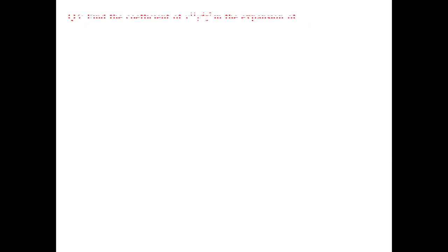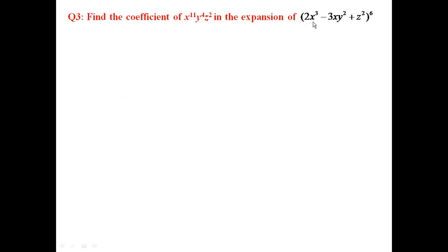Next problem: find the coefficient of x^11 * y^4 * z^2 in the expansion of (2x^3 - 3xy^2 + z^2)^6. We observe in the required expansion that more than two terms are involved: 2x^3 is one term, -3xy^2 is the second term, z^2 is the third term. Since more than two terms are involved, it's an application of multinomial theorem.